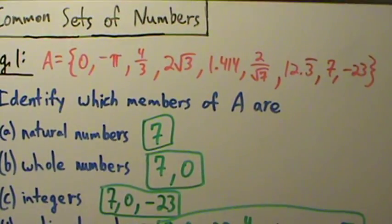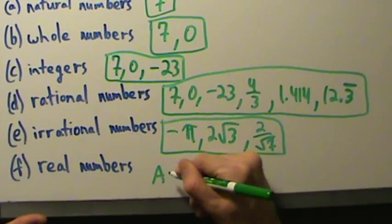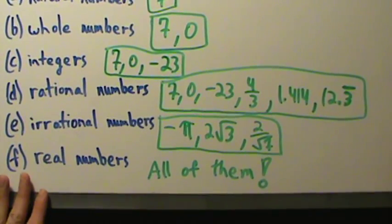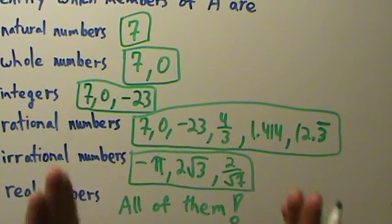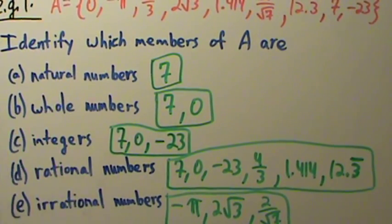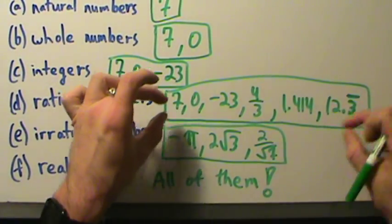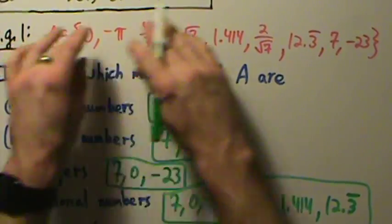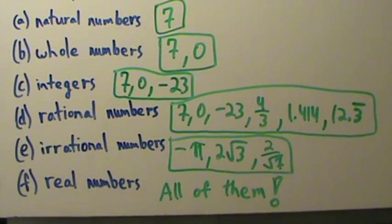How about the real numbers? Is there anything here that's not a real number? No — these are all real numbers. Every kind of number we've been talking about so far, they're all real, so that's all of them. The real numbers is defined to be rationals union with the irrationals. If we take all the rational numbers and union them with all the irrational numbers, we just get all of set A. So everything in set A is a real number.